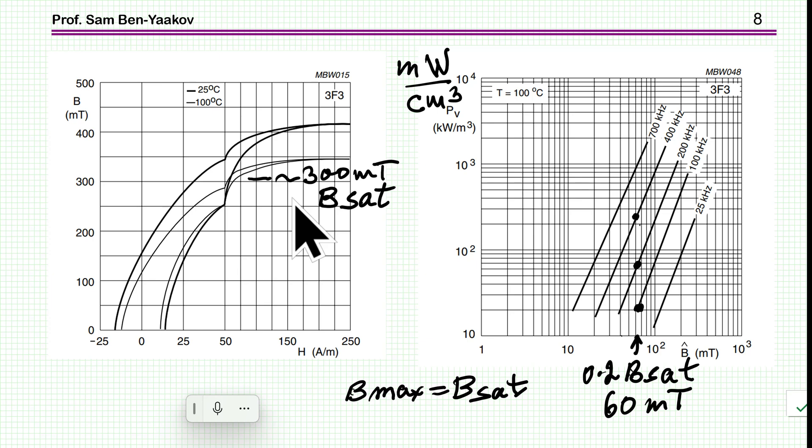I'm starting with the Ferroxcube material 3F3, very well known, an old material. We have now much better material in terms of lower losses at higher frequency, but I'm starting with this one just to see what is happening when it is used for the inductor for active power factor correction. Starting with the BH curve, we see that the saturation level is above 300 milli Tesla. Here is the 100 degrees level, so 300 seems to be a reasonable number for the saturation level. In order not to corrupt the power factor, I don't want too large of a ripple. I'm assuming the ripple is 0.2, so 0.2 of 300 is only 60 milli Tesla.